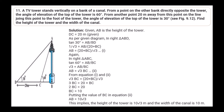Question 11: A TV tower stands vertically on a bank of a canal. From a point on the other bank directly opposite, the angle of elevation of the top of the tower is 60°. From another point 20 meters away from this point on the line joining to the foot of the tower, the angle of elevation is 30°. Find the height of the tower and the width of the canal. In right triangle ABD: tan 30° = AB/BD, so 1/√3 = AB/(20 + BC), giving AB = (20 + BC)/√3 (equation 1).